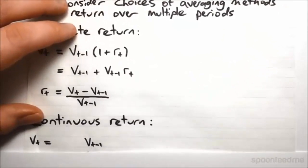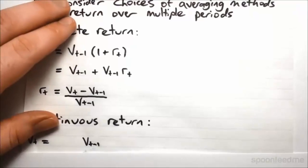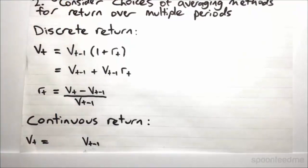Now second option is continuous return. This is saying instead of assuming that we have a constant value and then we instantly receive some amount at the end, we say, which is a little bit more realistic, that over time the value is constantly increasing. Instead of it just going up instantaneously, it's steadily going up.